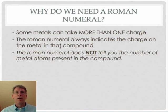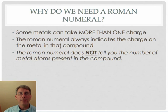Why do we need a Roman numeral? Again, some metals can take more than one charge. Where would you find those metals? Generally, in the transition metal section, some of them sneak into family 13 and 14. If in doubt, I would give it a Roman numeral. If you look on our ion sheet and it has a Roman numeral next to its name, be sure to use it. The Roman numeral, again, always indicates the charge that is on the metal. And the Roman numeral never tells you the number of metal atoms that are present in the compound. The Roman numeral simply tells you the charge that the metal is going to take.